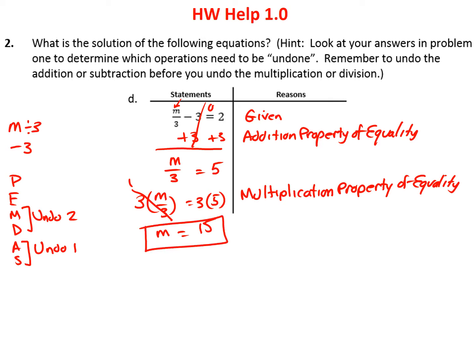Next, undo the division: the inverse of dividing by 3 is multiplying by 3. So I multiply both sides by 3. Notice 3 divided by 3 is 1, so I'm left with m, and 3 times 5 is 15. The reason we could do this step is the multiplication property of equality. Let's check: 15 divided by 3 minus 3 — 15 divided by 3 is 5, and 5 minus 3 equals 2, which is correct.